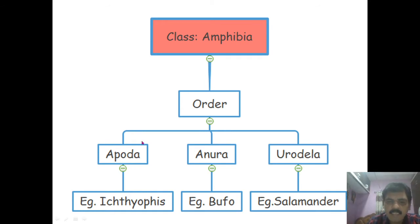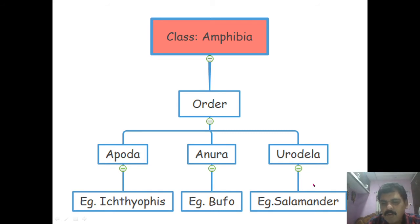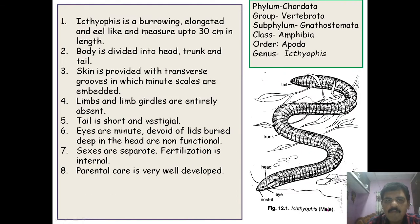You have to study one representative example from each order. From Apoda, the example is Ichthyophis. From Anura, it is the toad — Bufo. And from Urodela, it is Salamandra. First we will discuss Ichthyophis, which belongs to Order Apoda.